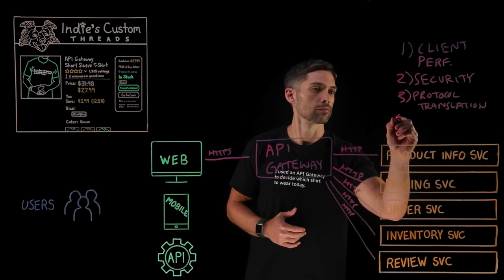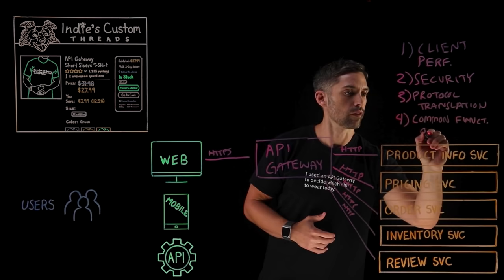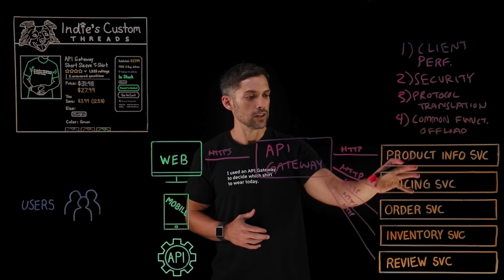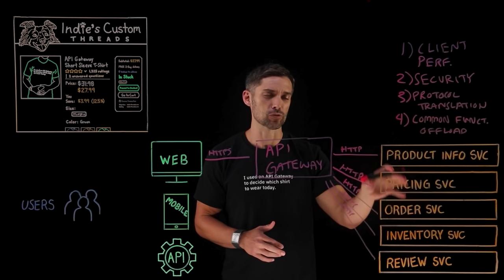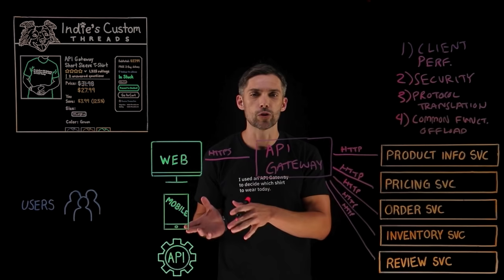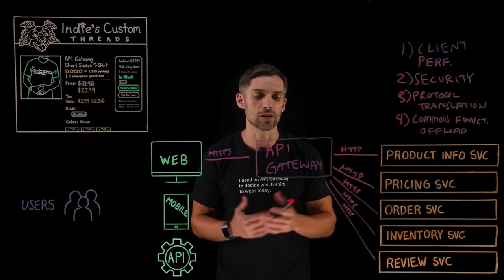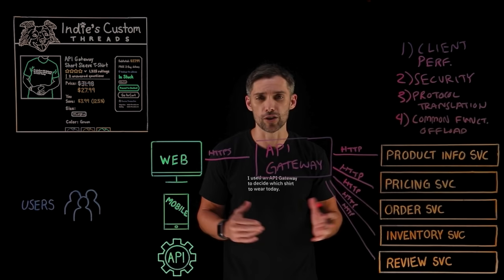The last benefit is Common Functionality Offload. We're offloading common functionalities that every microservice previously had to handle, so we take some of that business logic and put it in the API gateway. Your microservices can then run more efficiently, focused only on their core tasks. This includes things like rate limiting — for example, 10 requests per 60 seconds — as well as API monitoring and logging to keep an eye on API health and operations. There are many more standard features typically available with an API gateway solution.